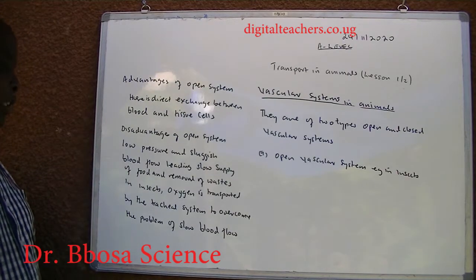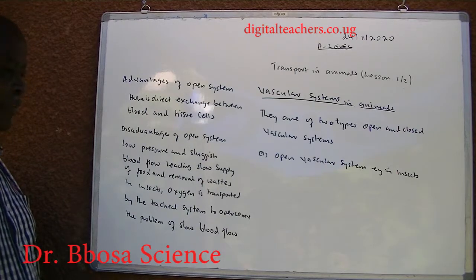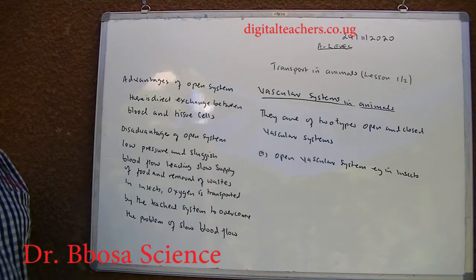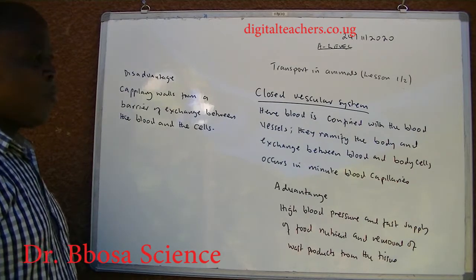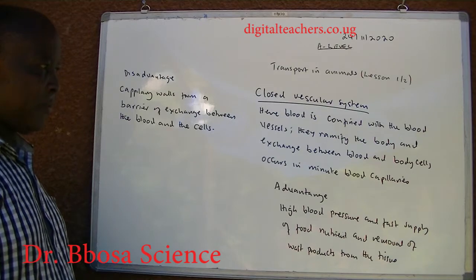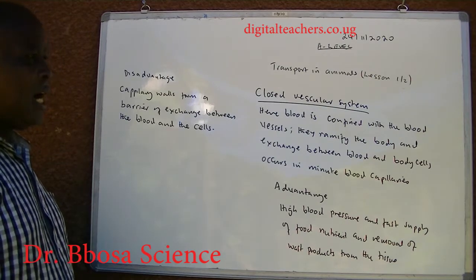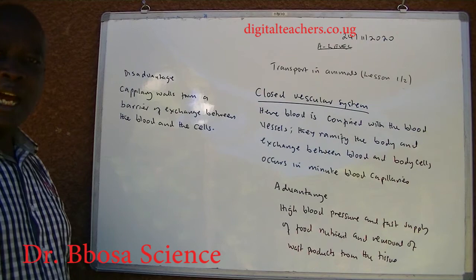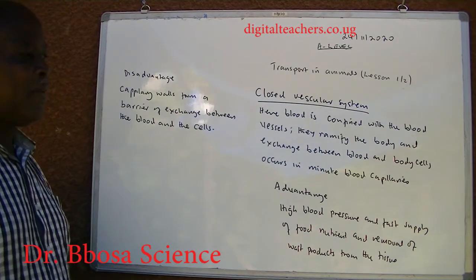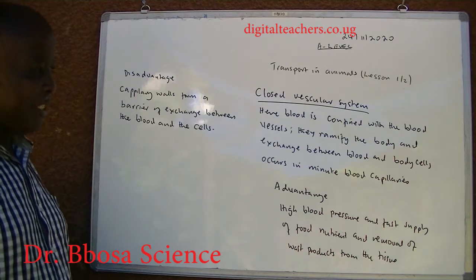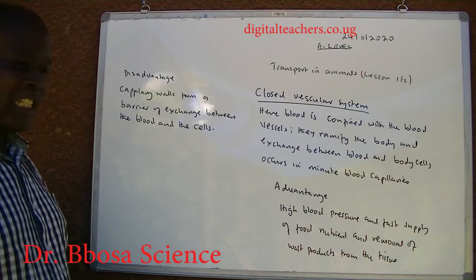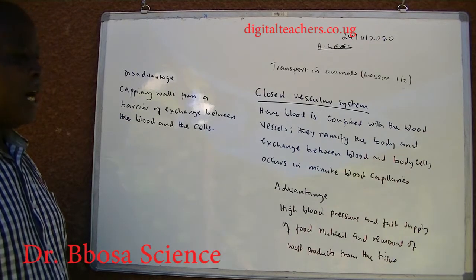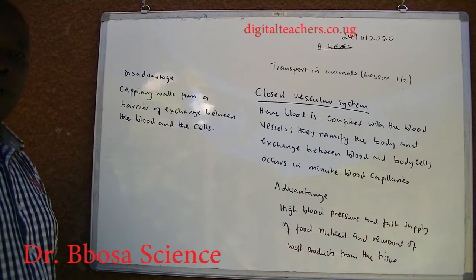In insects, oxygen is transported by the trachea system to overcome the problem of slow blood flow. Closed vascular system: here blood is confined in blood vessels that ramify the body, and exchange between blood and body cells occurs in minute blood capillaries. Advantage: high blood pressure and fast supply of food nutrients and removal of waste products from the tissue.